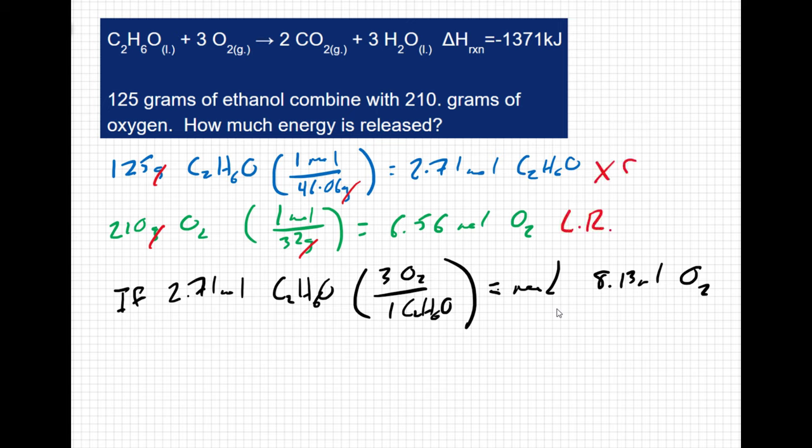This means we have an excess of ethanol. Now that we know our limiting reactant, we can use it to determine how much energy would be released. I'll take 6.56 moles of oxygen, which is how much we actually have.